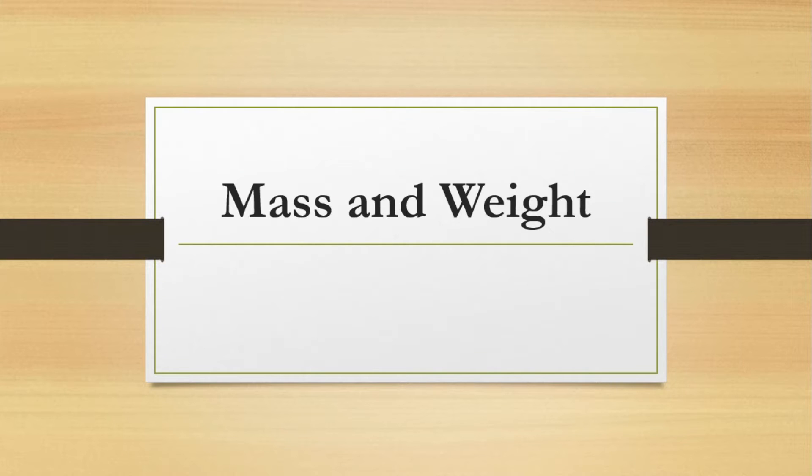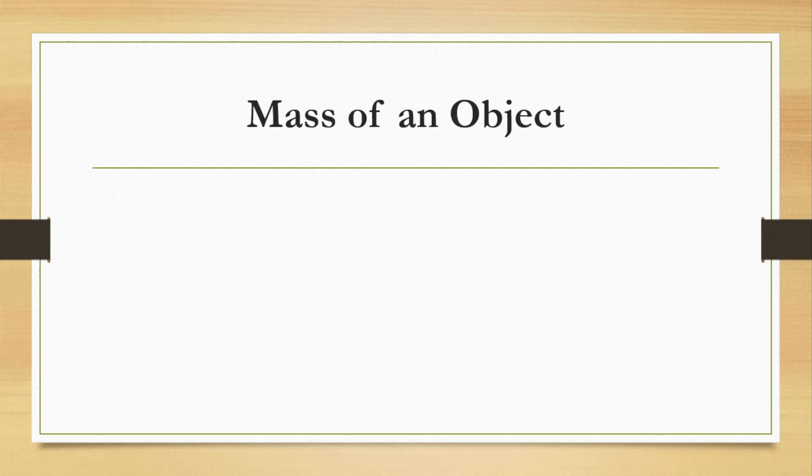Let's go ahead and get started with our notes about mass and weight. So the first thing we want to talk about is mass of an object. And we want to talk about what is mass. Well, mass is just the amount of matter an object has. So in other words, mass is how much of something an object has.